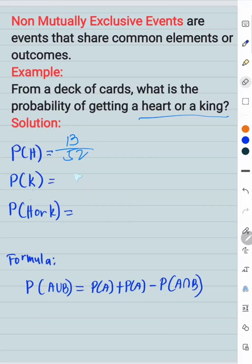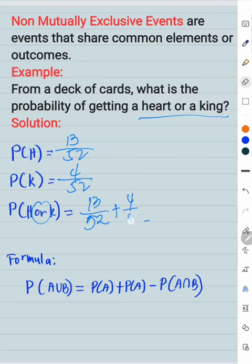Probability of getting a king, 4 kings out of 52. Now, you can add these two, combine them, because of the word or, union, we're just combining, plus 4 over 52.